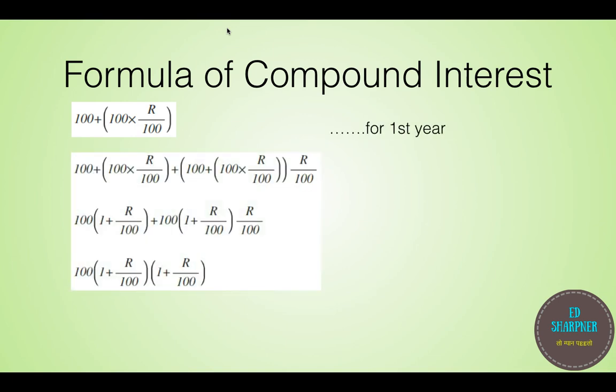Now in the next step, what we are doing is we are taking the same principle and adding the interest on the new principle by multiplying it with R by 100 in the next term. So as you can see in the 4th term, if we simplify, we get 100 into 1 plus R by 100 raised to 2, which is the amount after 2 years.